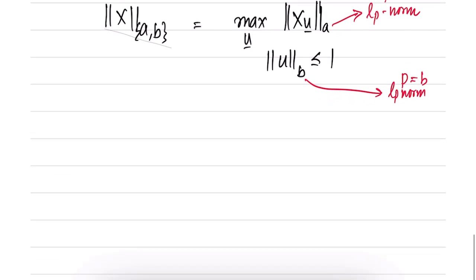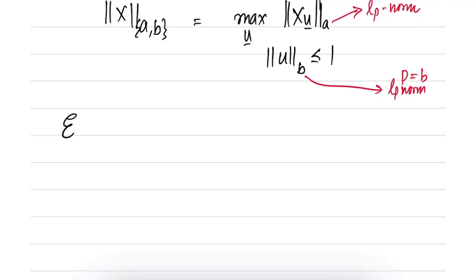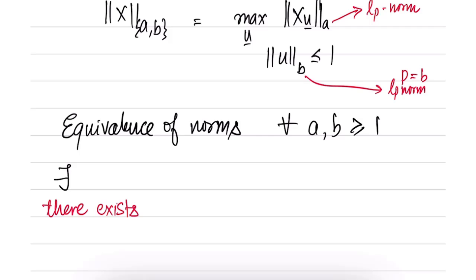Finally I want to talk about one result which is very useful. It is called the equivalence of norms. The result says that let a and b be some numbers such that they are greater than or equal to one. Then the result says that there exists some constants α and β such that ||x||_b is less than or equal to β times ||x||_a and greater than or equal to α times ||x||_a. So in other words what we are saying is that you take any two norms, then you can bound one of them in terms of the other one both upper and lower.